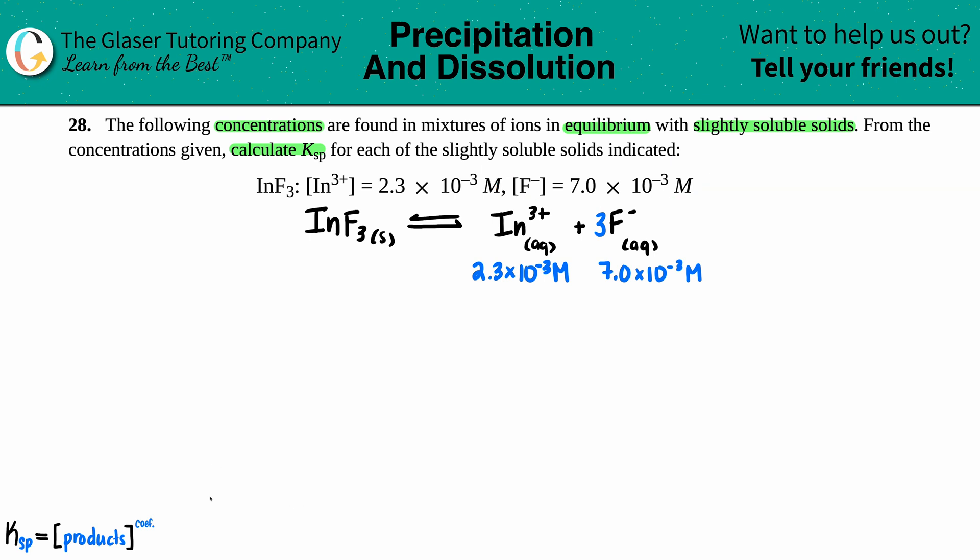Now let's use the general formula for the Ksp and find out what our formula is. It's just the concentration of the products because those are your aqueous substances. So Ksp equals concentration of In³⁺ times the concentration of the fluoride ion, and then make sure you're raising it to their coefficients. There was a 1 in front of the indium, so you raise this to the first, but that's the same as just not having it. But there's a 3 in front of the fluorine, so I have to cube that.